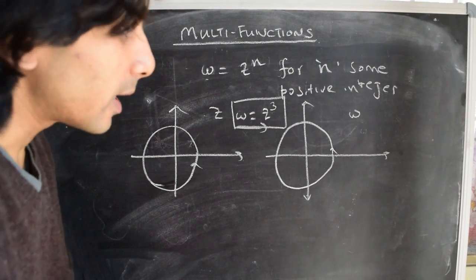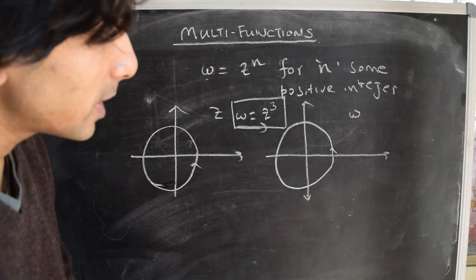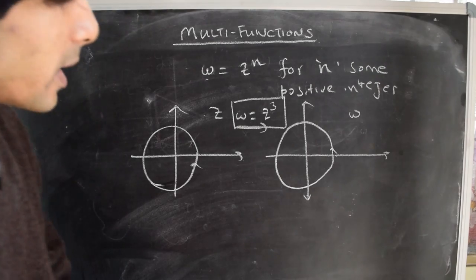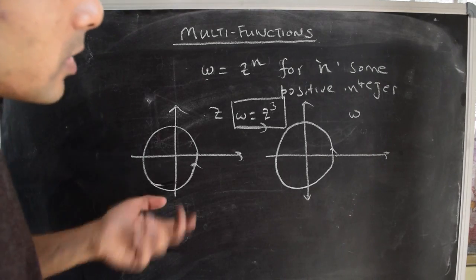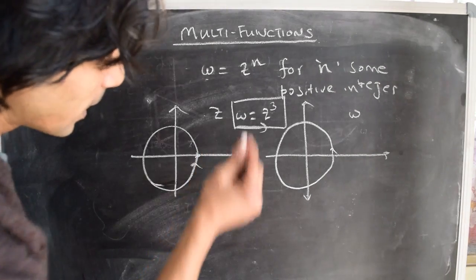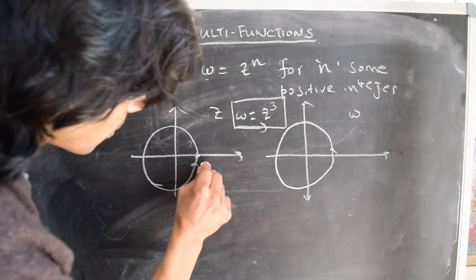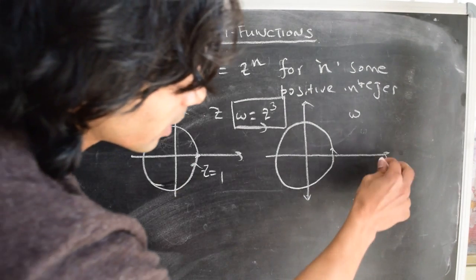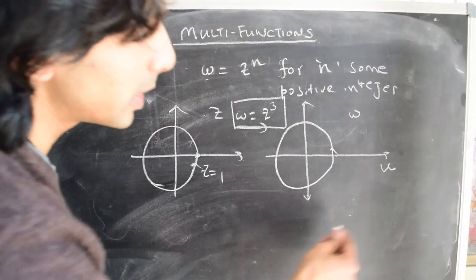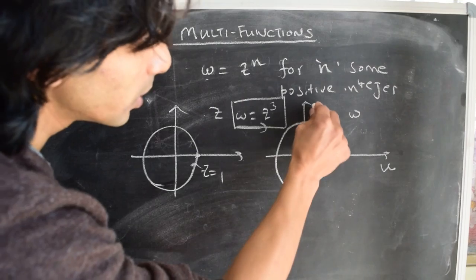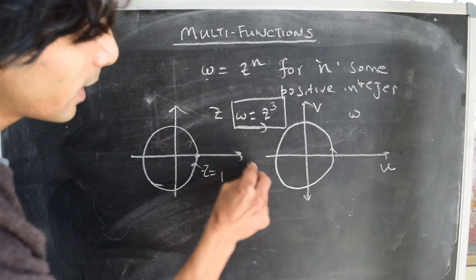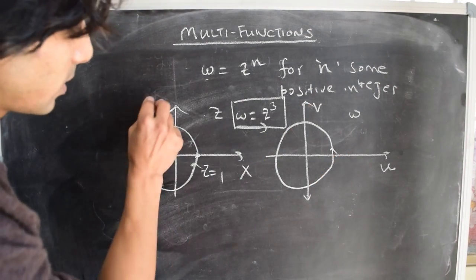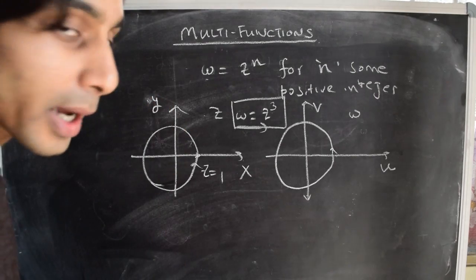However, there were some interesting features of this mapping that we explored in detail. Just as a reminder, some of these features were the following. The real axis in the w-plane we label with the symbol u, the imaginary axis with the symbol v, and likewise for the z-plane, the real axis with the symbol x and the imaginary axis with the symbol y.